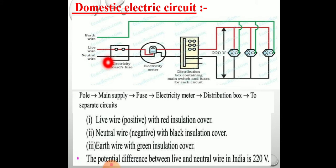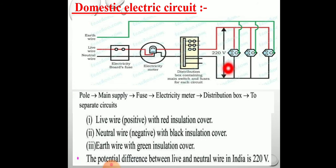You can see here: the electricity board fuse is first, then it is connected to the electric meter at our homes — which is on the outside — and later connected to the distribution box or MCB, where there is a separate fuse for each circuit. From there it is taken to different rooms. The live wire with red insulation is positive, the neutral is the negative wire, and the earth wire has green insulation. The potential difference between live and neutral in India is 220 volt, with a frequency of 50 hertz.